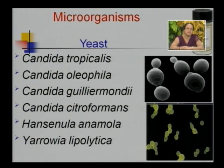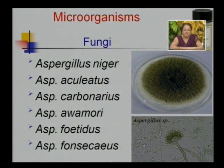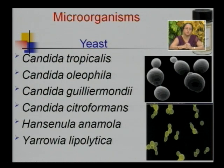The main organism, as you can see in the slide, is Aspergillus niger — its growth on a Petri dish as well as its appearance under a microscope — and it is the one best used for citric acid production. Yeast is also used for citric acid production, but the problem is the simultaneous formation of isocitric acid along with citric acid, which is why yeast is not mostly used. The yeast species used include Candida tropicalis, Candida lipolytica, Candida guilliermondii, Candida citroformans, Hansenula anomala, and Yarrowia lipolytica.